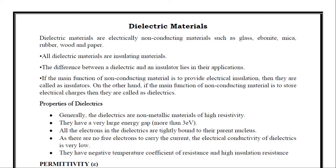All dielectric materials are insulating materials. The difference between a dielectric and an insulator lies in their applications. If the main function of a non-conducting material is to provide electrical insulation, then they are called insulators. On the other hand, if the main function is to store electrical charges, then they are called dielectrics. That is the main difference between an insulator and a dielectric material.